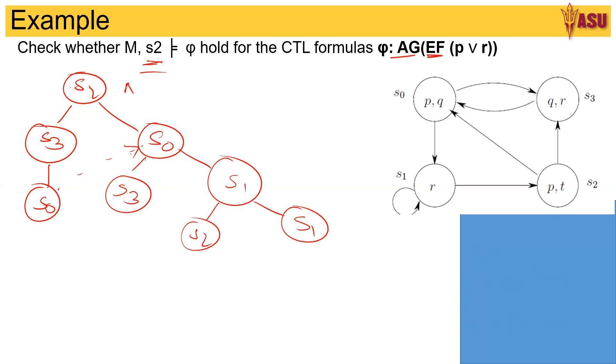Now here I need to say AG(EF(p ∨ r)). That means here I should have in both these cases EF(p ∨ r). So that means at least there exists one path which has an r or a p in anything that comes after this.